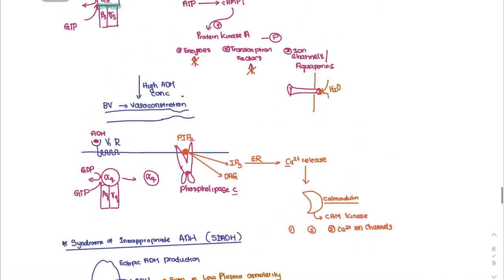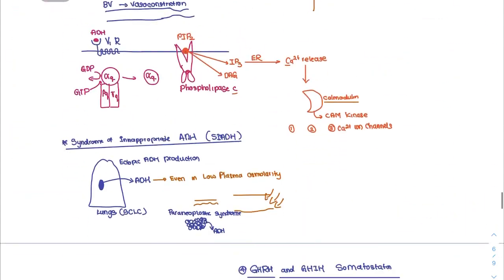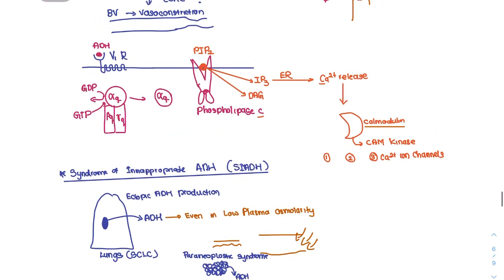If there is low plasma osmolarity — meaning high water content in blood — but still excess ADH production, this indicates ectopic ADH production. Most commonly this occurs due to a lung tumor called small cell lung carcinoma, which has a paraneoplastic function producing ADH even when plasma osmolarity is low, resulting in high water levels in the body.